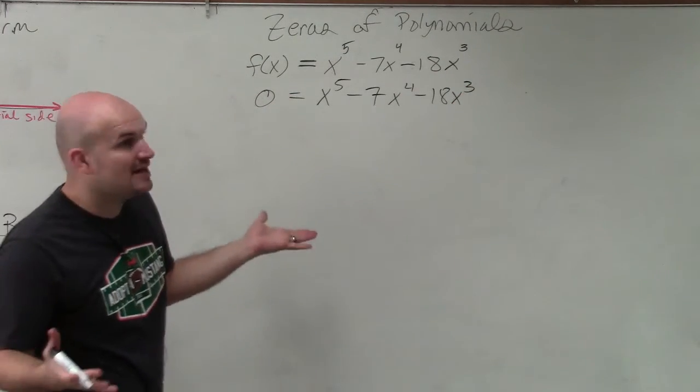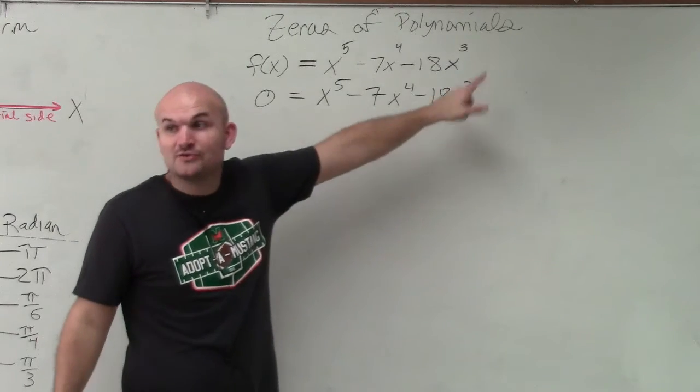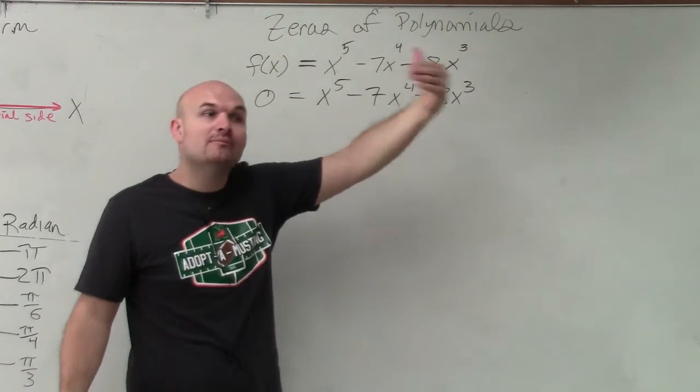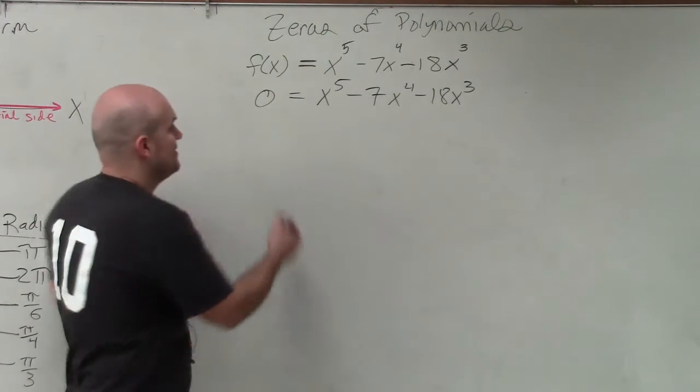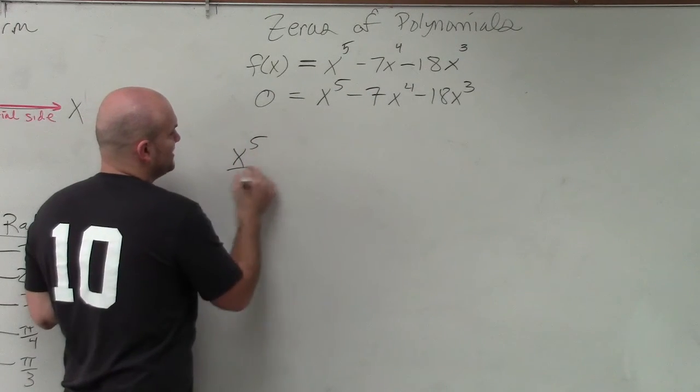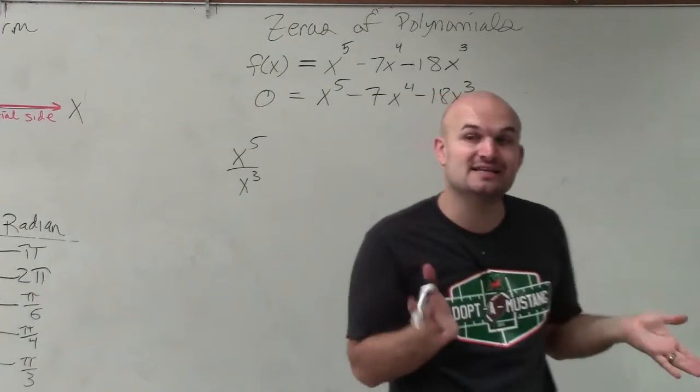Now let's factor out an x. But you guys can see we not only just have one x in common, we have x to the third power in common. Remember, dividing out or factoring out an x is like dividing out an x. So think about it. x to the 5th divide out an x to the 3rd. How many times does x to the 3rd divide into x to the 5th?